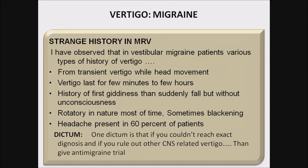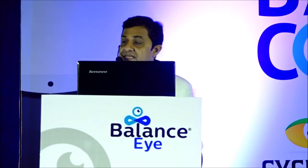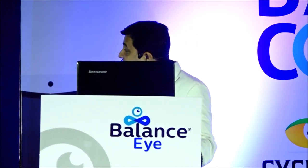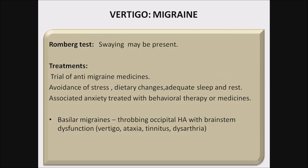From my clinical practice, I observe different types of complaints in migraine patients: from transient vertigo with head movement to vertigo lasting a few minutes to hours, history of giddiness then sudden fall without unconsciousness, usually rotatory in nature, sometimes with blackening. Headache is present in 60% of patients. If you cannot reach an exact diagnosis and have ruled out other CNS-related vertigo, give an anti-migraine trial — I succeed in more than 50% of such undiagnosed patients. Treatment includes anti-migraine medicines, lifestyle modification, and dietary changes.